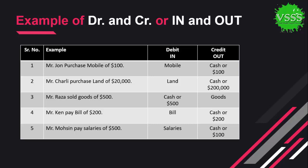In the first example, Mr. John purchases a mobile for $100. In this example, the mobile is coming to us — it will be debited. The cash is going from us — it will be credited. In the second example, Mr. Charlie purchases land for $20,000. Land is coming to us, so it will be debited, and cash is going from us, so it will be credited.